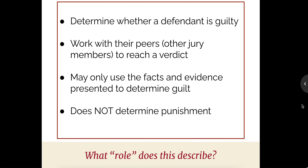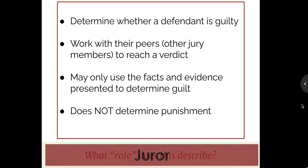Next, this group of people's job is to determine whether a defendant is in fact guilty. They work with their peers to reach a verdict. They may only use the facts and evidence presented to determine guilt, and their job is not to determine the punishment. This describes a juror — the jury.